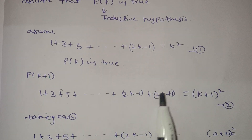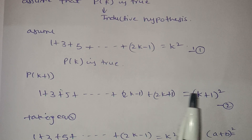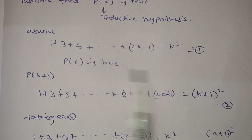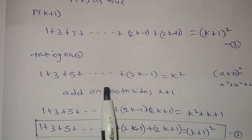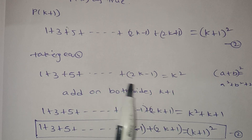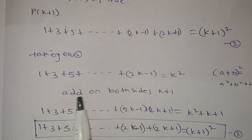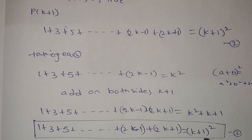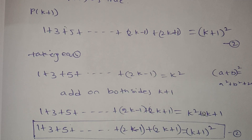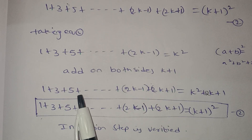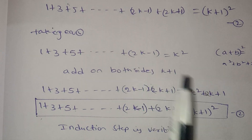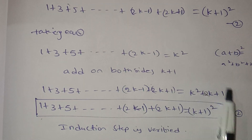We will add 2k plus 1 to both sides. Taking equation 1: 1 plus 3 plus 5 up to (2k minus 1) equals k squared. Add on both sides the (k plus 1)th term, which is 2k plus 1. So add 2k plus 1 to get: 1 plus 3 plus ... plus (2k minus 1) plus (2k plus 1), and on the right side k² plus 2k plus 1.